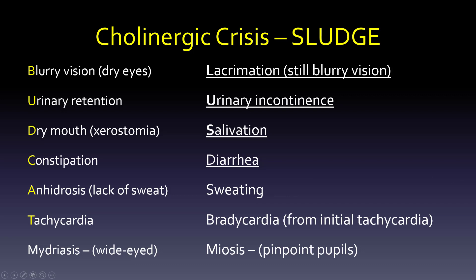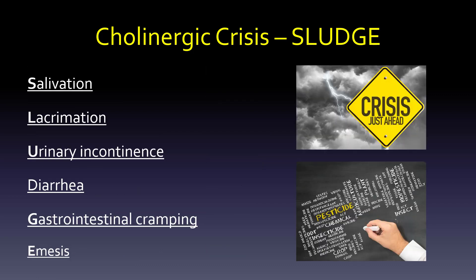Let's put those in the SLUDGE order now and add the other pieces. We have salivation, lacrimation, urinary incontinence, and diarrhea. And then we have GI cramping and emesis. There's a crisis-ahead signpost with a big thunderstorm and lots of rain coming, to remind you that SLUDGE is SLUDGE because it's so wet.